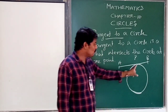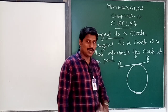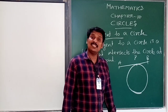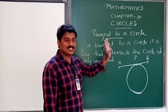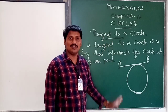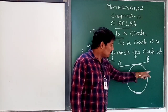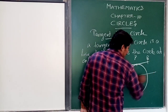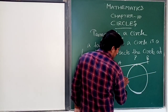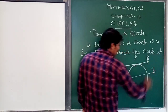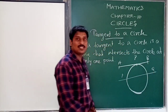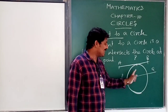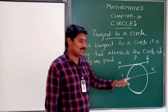One point — if you touch each other at one point, then we mark it as tangent to a circle. Now we will mark 1 point: P, Q, and 1 line. With 2 points, we can see a secant.